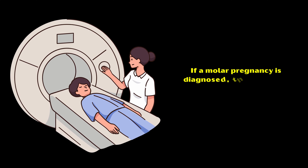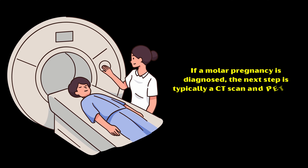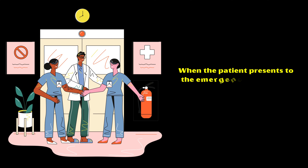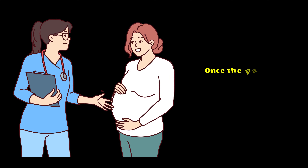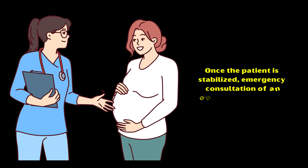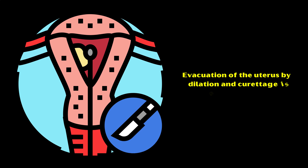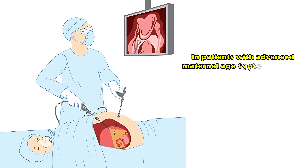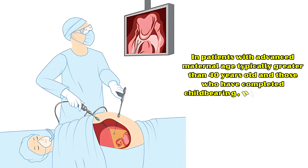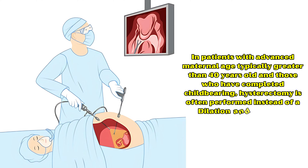If a molar pregnancy is diagnosed, the next step is typically a CT scan and PET scan to stage the disease. When the patient presents to the emergency department, initial stabilization if unstable is mandatory. Once the patient is stabilized, emergency consultation of an obstetrician is essential. Evacuation of the uterus by dilation and curettage is always necessary. In patients with advanced maternal age, typically greater than 40 years old, and those who have completed childbearing, hysterectomy is often performed instead of a dilation and curettage.